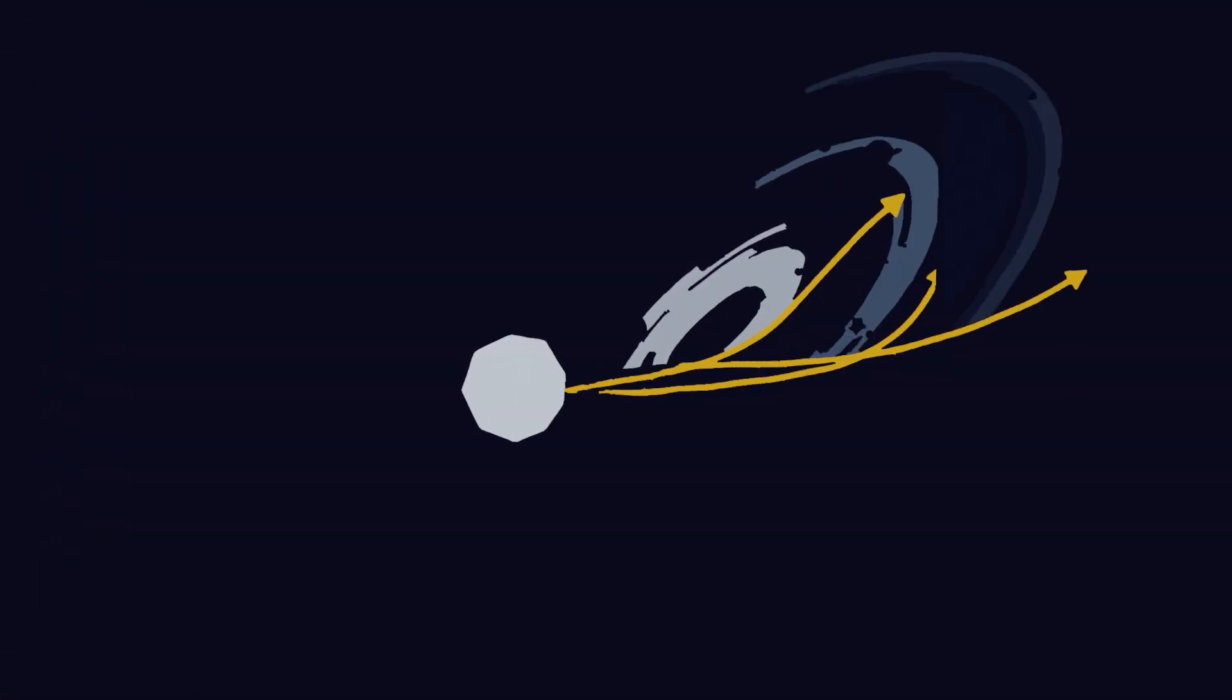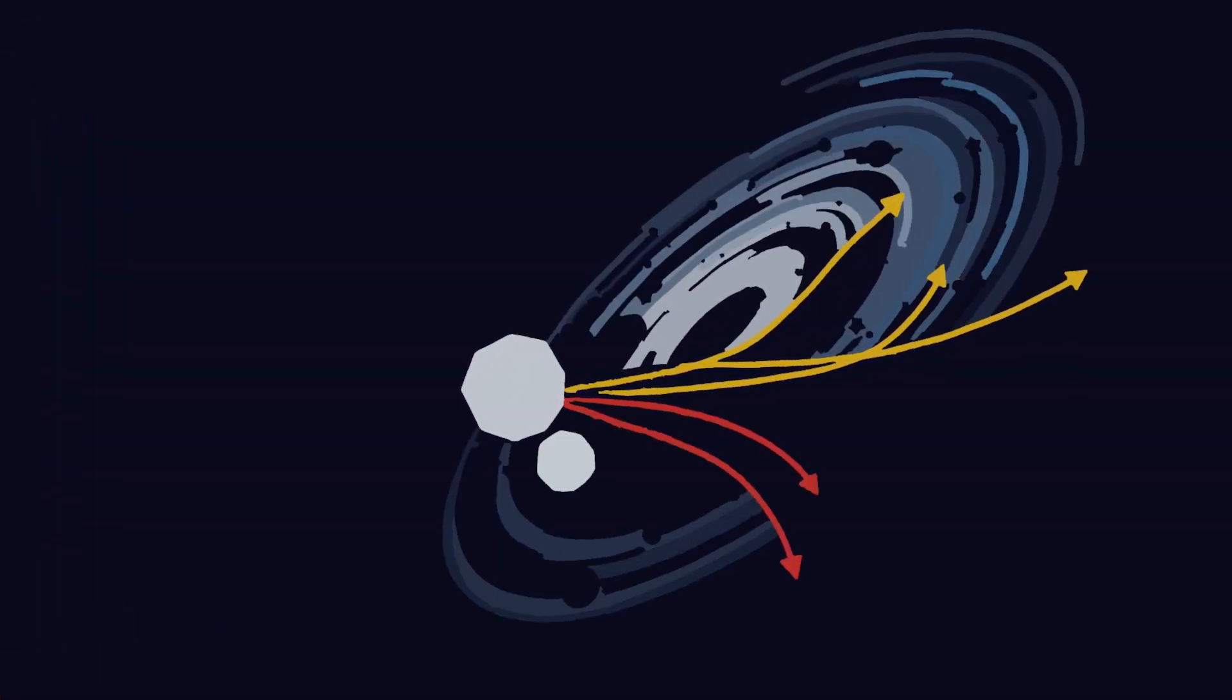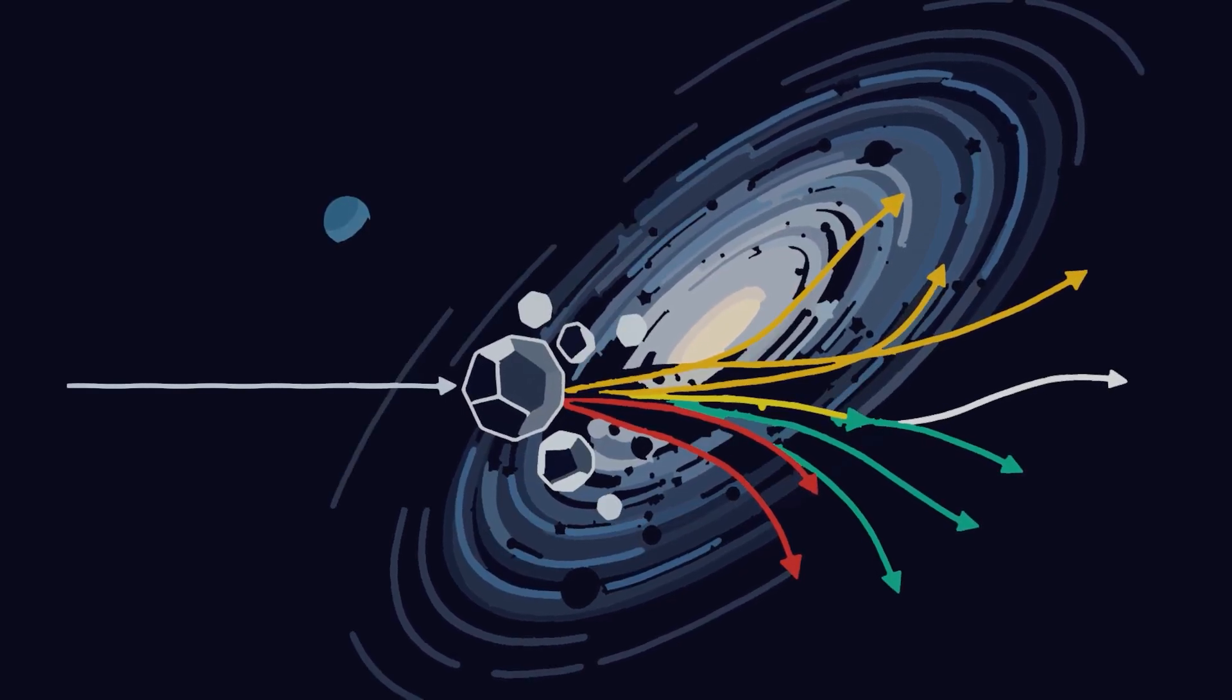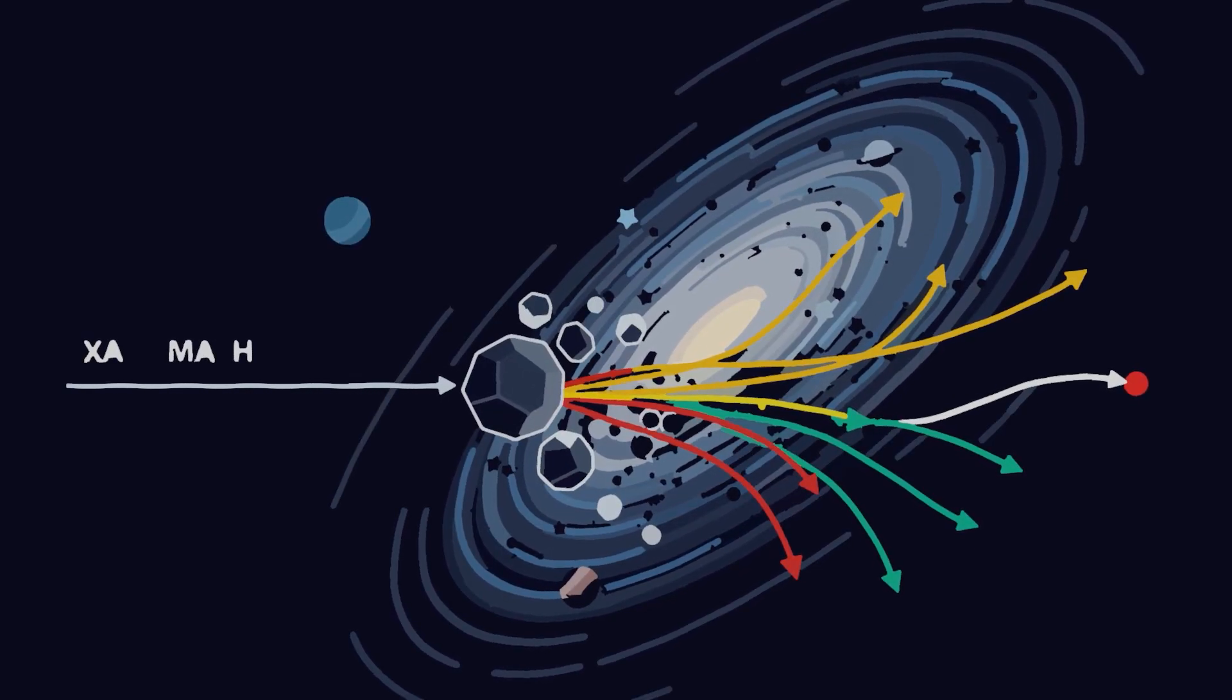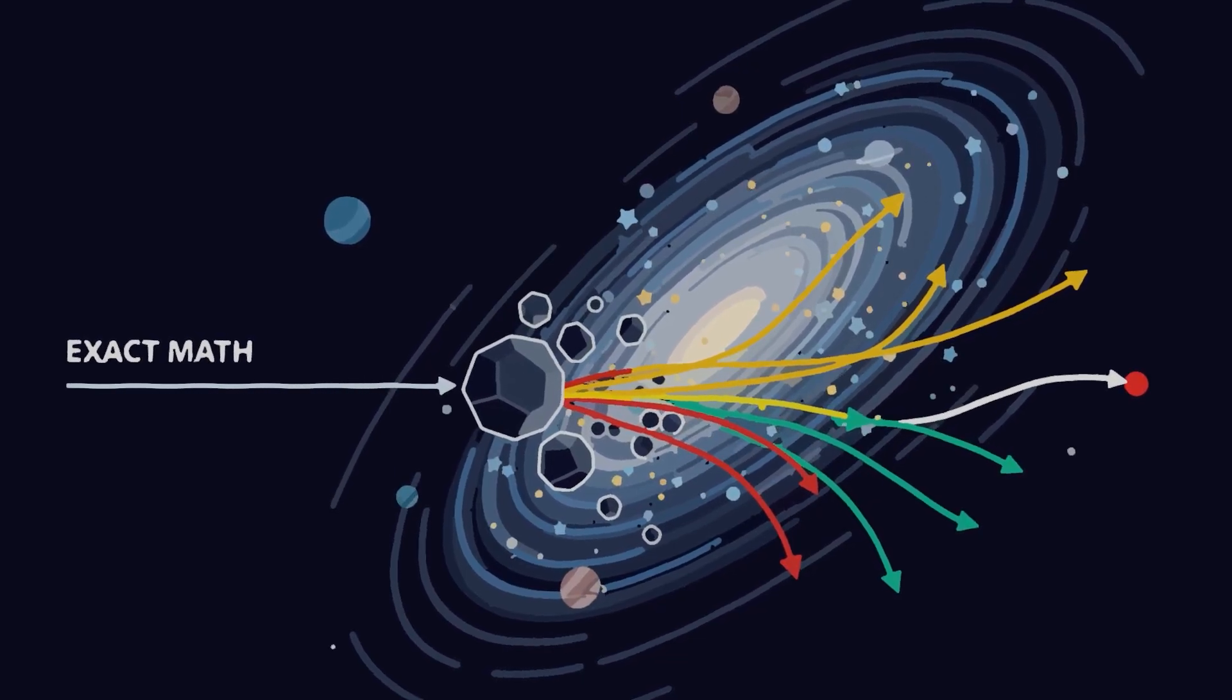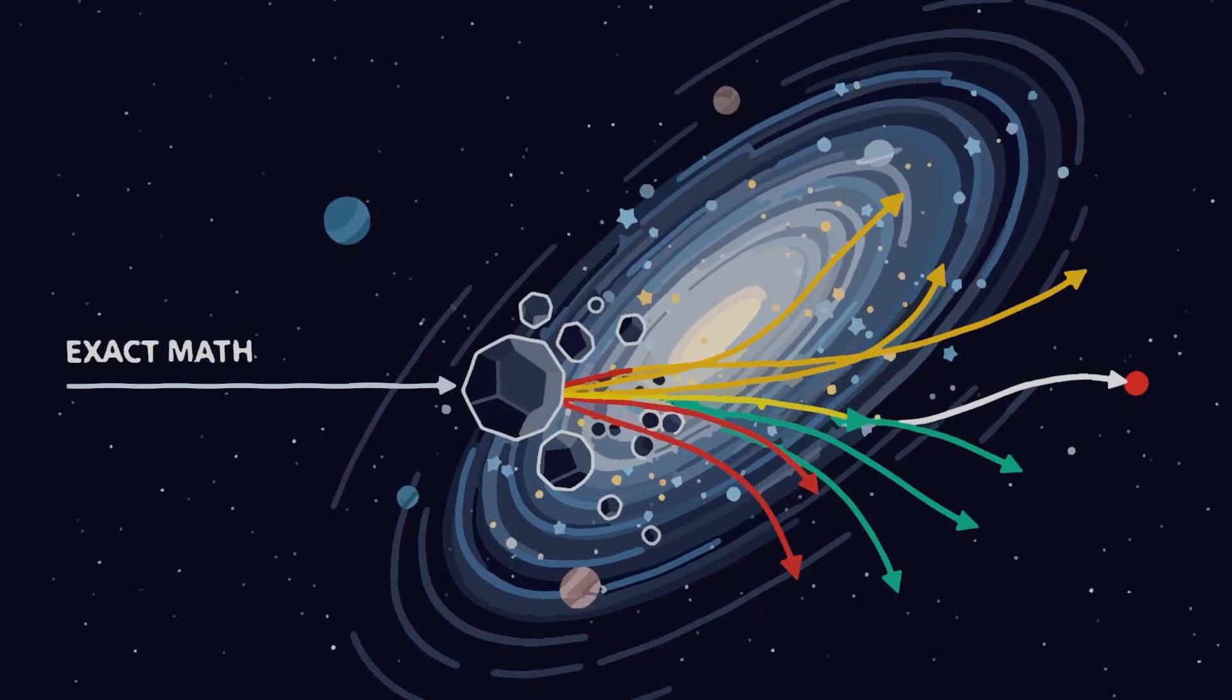Now, we get to one of the most counterintuitive parts. Why would random sampling solve problems that exact math can't? The answer is that randomness lets us explore enormous spaces without having to check every possibility.